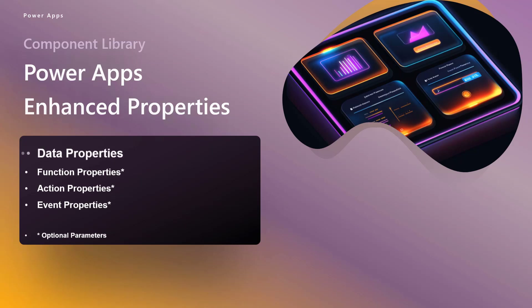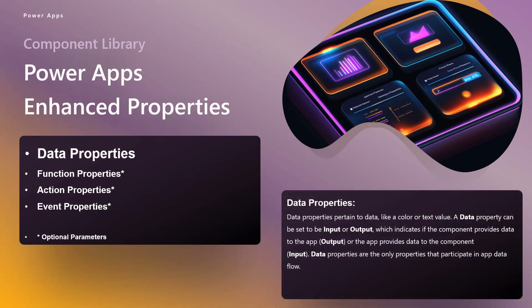Let's talk about data properties first. These are the most similar to what we currently have today. You pretty much identify a data property to be an input or an output, which means that you're passing information into the component from the app — input — or the component is passing information over to the app — output. And you can identify what the data type is: text, image, record, there's a whole plethora of choices. You're just passing data back and forth between the component and the app.